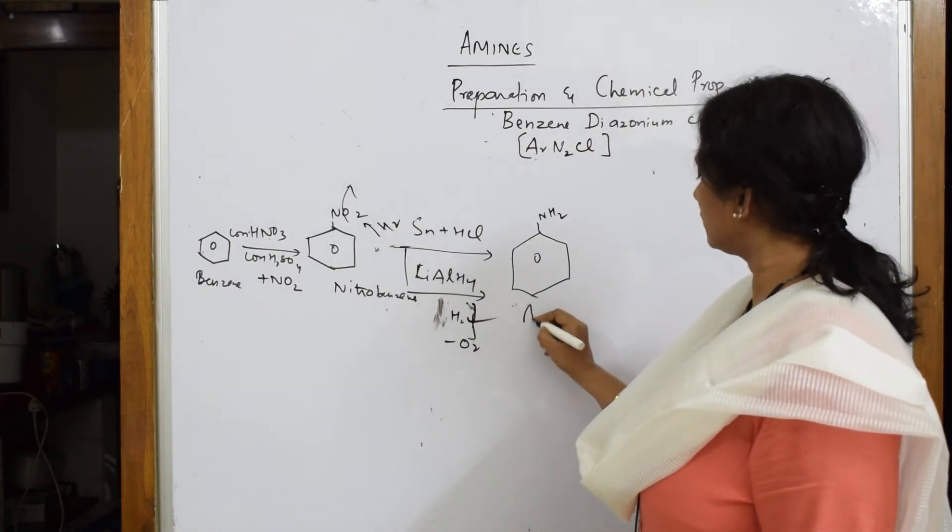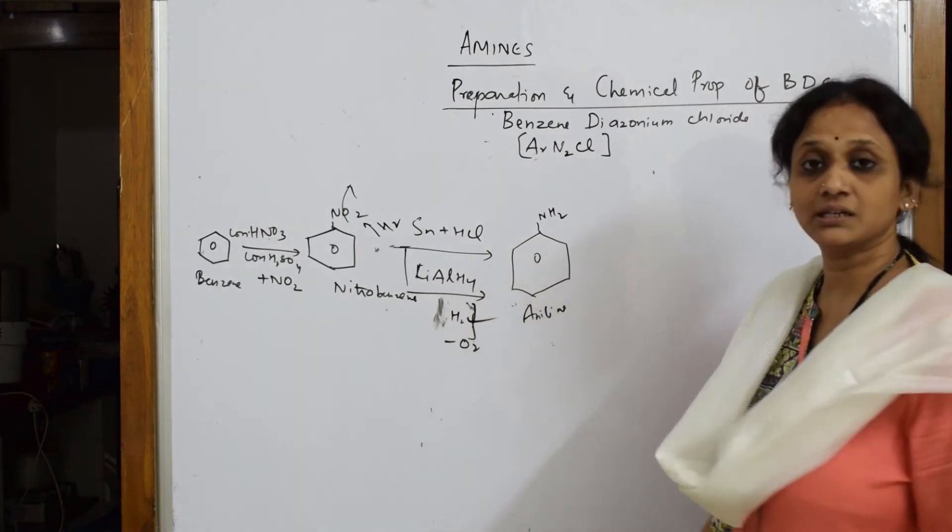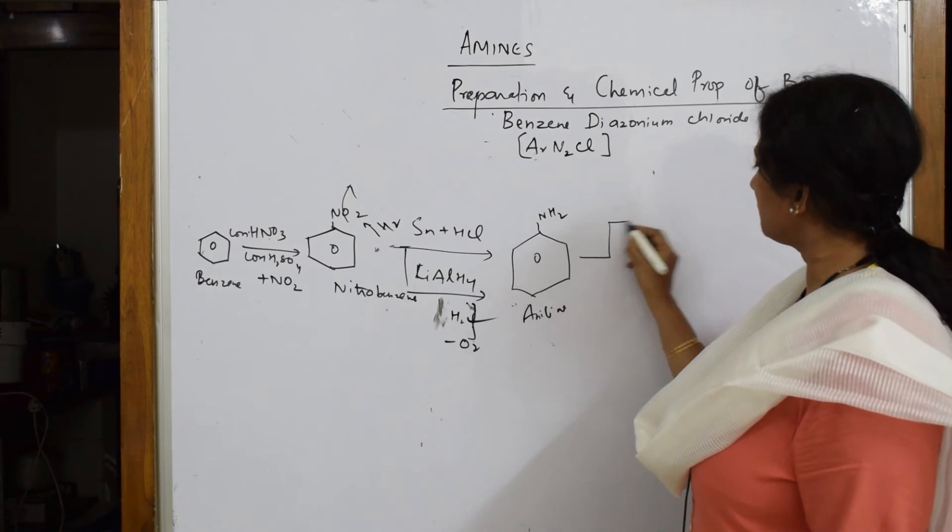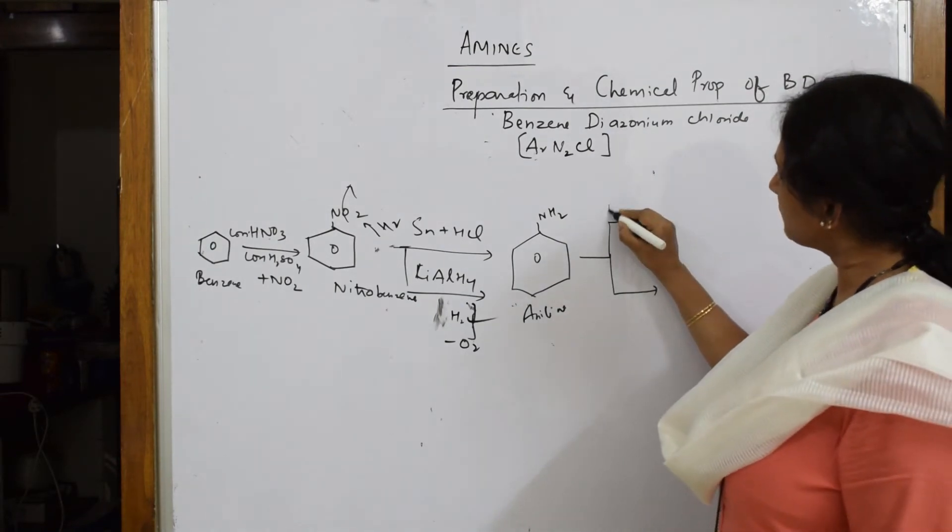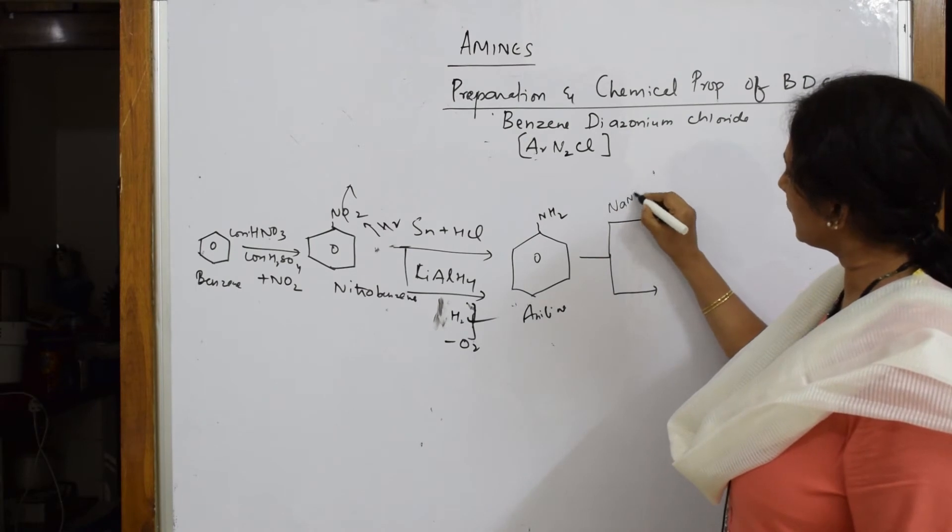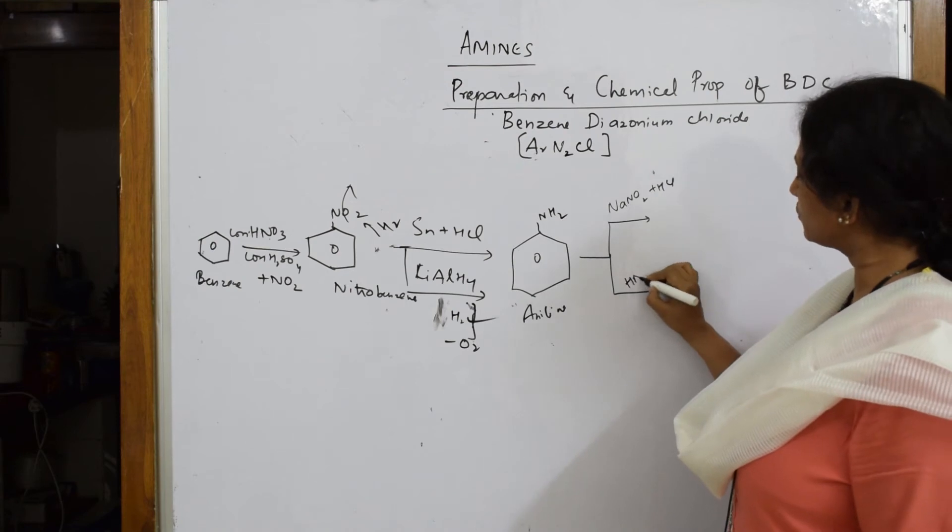Now I still have not prepared BDC. From aniline, BDC can be prepared by two methods. One is, if you see in your paper, NaNO2 plus HCl - one composition, or HNO2 also.